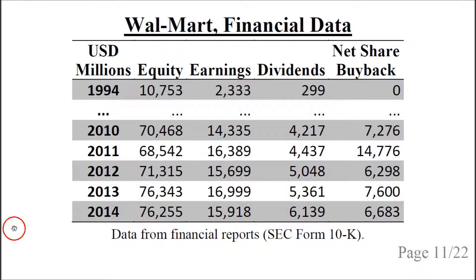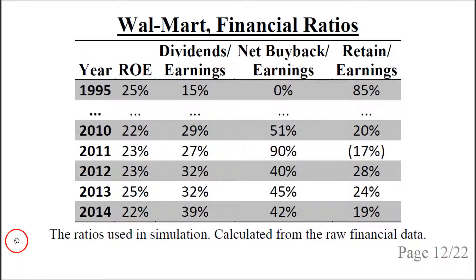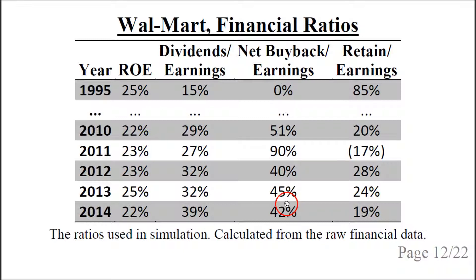Let's look at an example for Walmart, taking data from the financial reports. We have the years, the equity in US dollar millions, the earnings or net income, the dividends, and the share buyback net of issuance. We use this financial data to calculate ratios for return on equity — that is, earnings for year T divided by equity for year T-1. Note how stable the return on equity is. Then we have the dividends divided by earnings and the net buyback divided by earnings, from which we can calculate the amount of earnings retained each year.